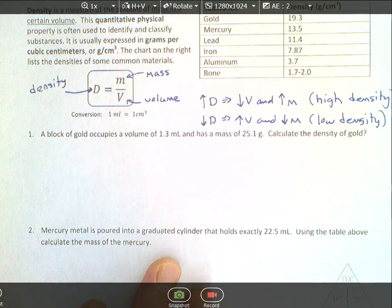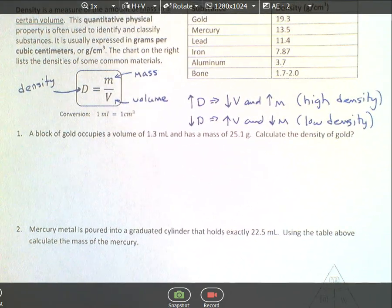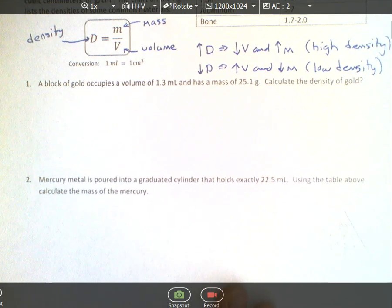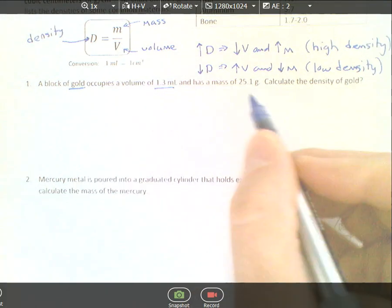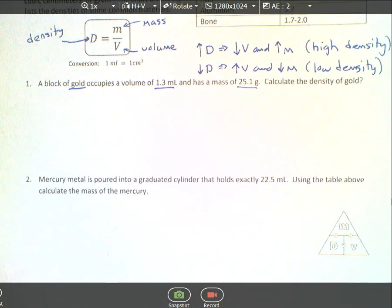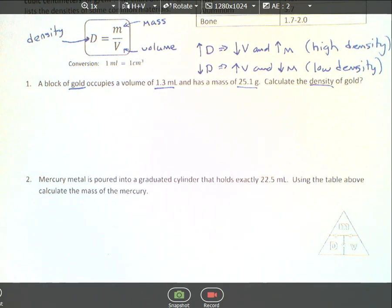How do we do these calculations? They're fairly straightforward. A block of gold occupies a volume of 1.3 milliliters and has a mass of 25.1 grams. Calculate the density of gold. Notice how I underlined key parts of the question. Underlining helps you sort out what you need to find, what to calculate, and the given information.